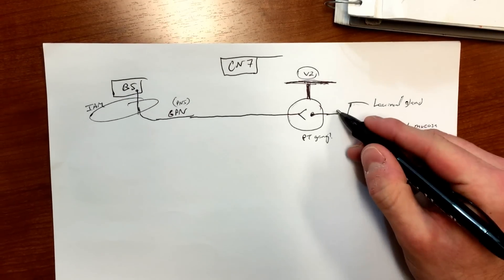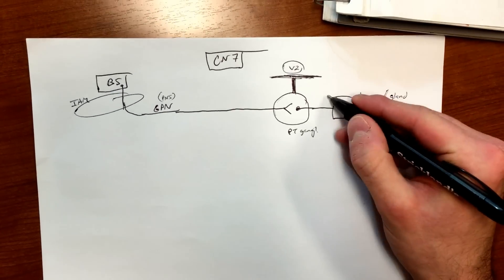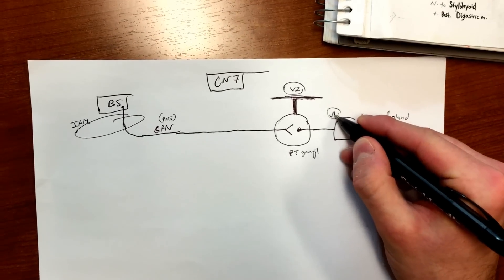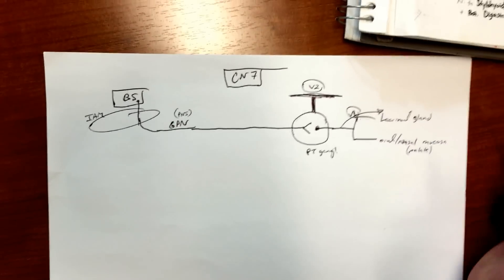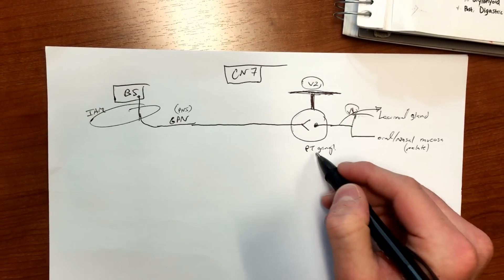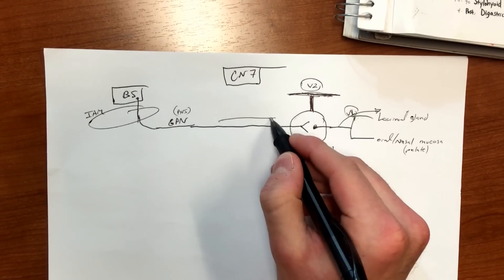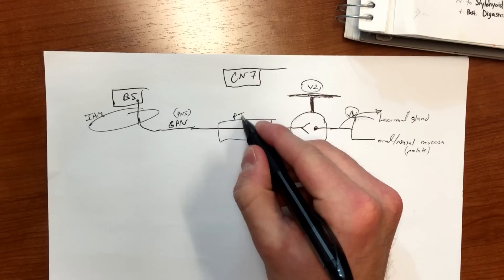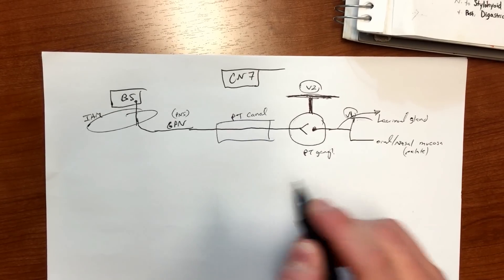And another thing to add - as we're going to the lacrimal gland area, this is gonna hitch a ride on V1 off of trigeminal to get there. That will make sense later as well. And here, as we're getting to the PT ganglia, you have the PT canal.